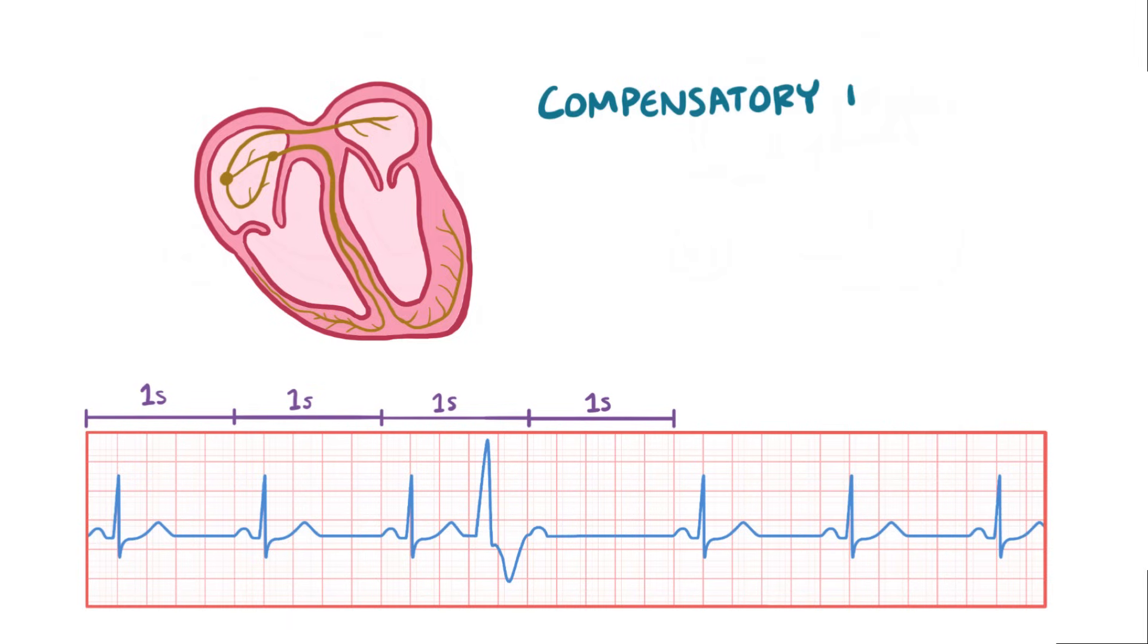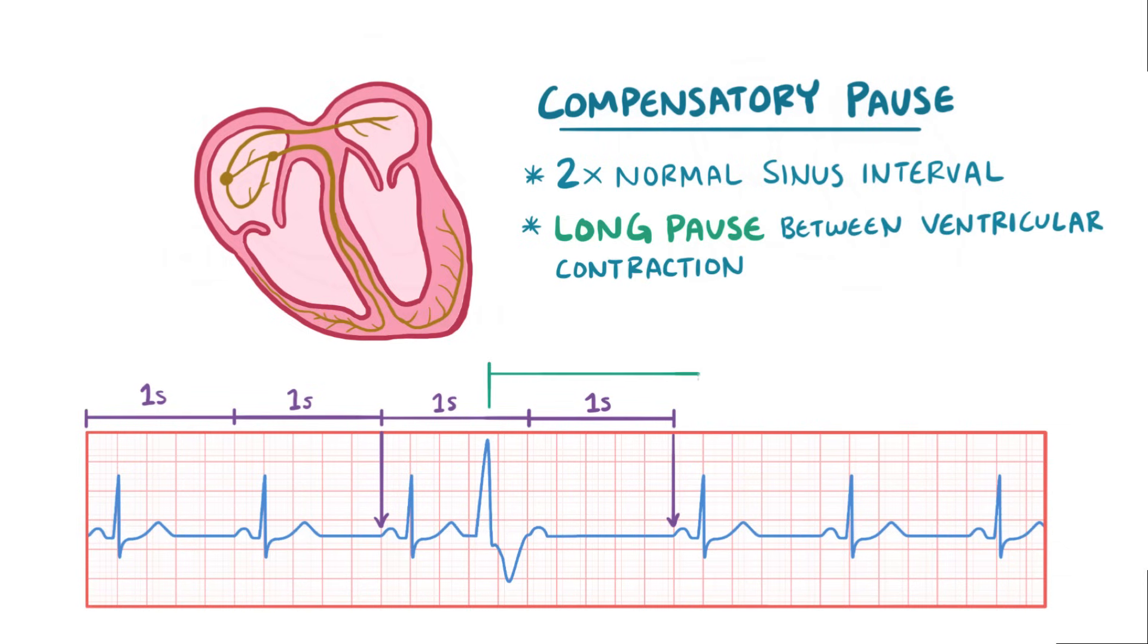This situation is called a compensatory pause, which is defined as having a normal sinus complex landing exactly 2 times the normal sinus interval, which was 1 second, so 1 times 2 equals 2 seconds. What ends up happening here is there's this big long pause between ventricular contractions, which is greater than the sinus interval.